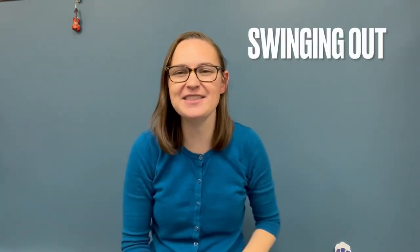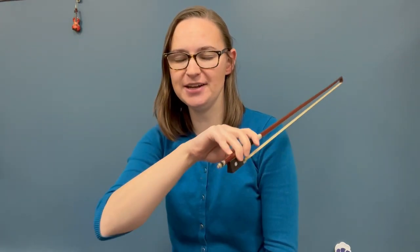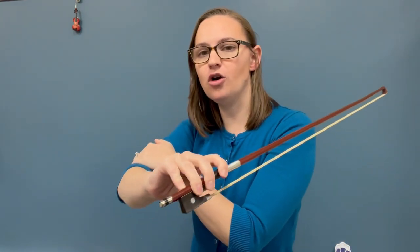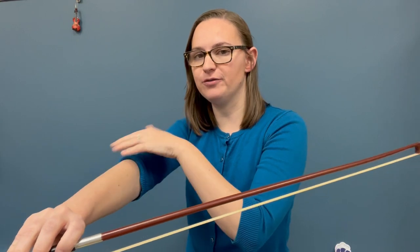One more exercise for today. This one is swinging out. For swinging out, you are going to practice opening and closing your arm like this, so you're bending and straightening your arm. What I'm going to do to help me out with this is take my left hand and hold my upper arm just above my elbow to make sure it is not swinging backwards at all. I only want to open and close the lower part of my arm.